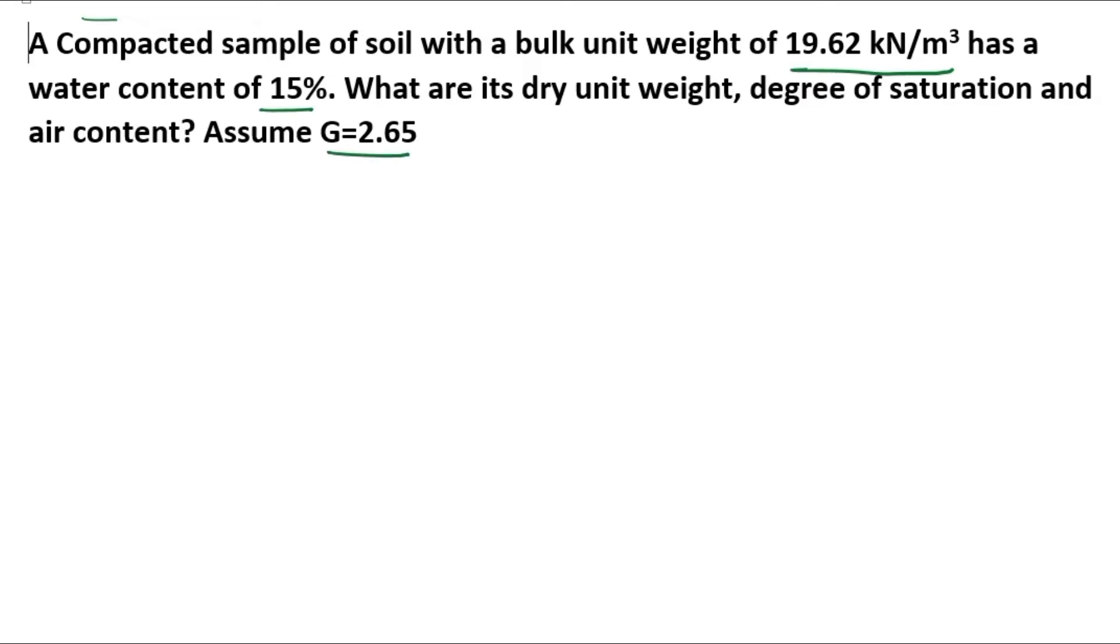First we can note the given data. Given: gamma bulk unit weight equal to 19.62 kN per meter cube, water content W equal to 15%, and G equal to 2.65.